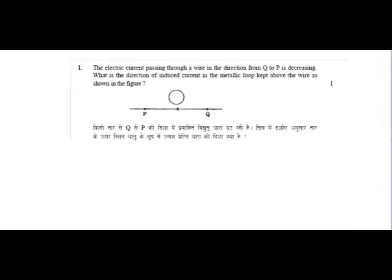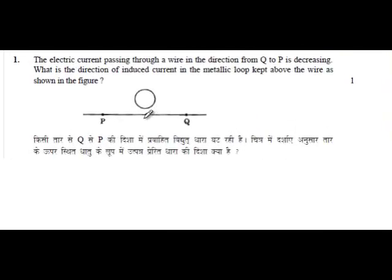The current flowing in the wire is decreasing and the current is flowing in the direction from Q to P. Now when the current will flow in this wire, suppose we draw the wire over here, and when the current flows through this wire you have a magnetic field